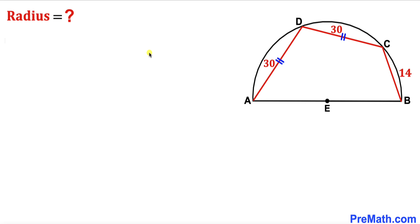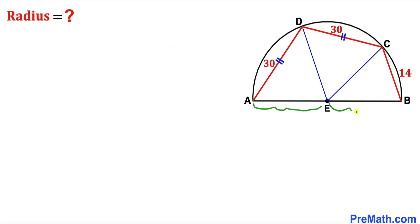Let's get started. I have drawn auxiliary lines ED and EC by connecting center E with points C and D. We can now see that AE, EB, ED, and EC are all radii of this semicircle. Let me represent the radius as lowercase r.